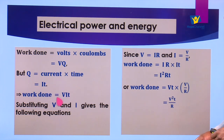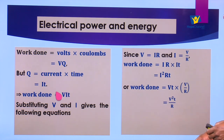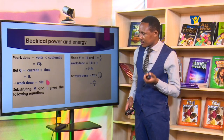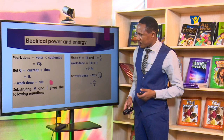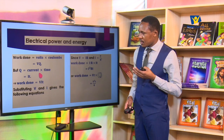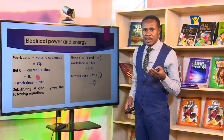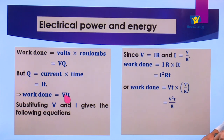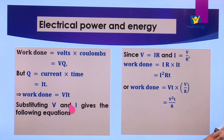Electrical energy is given by potential difference times current times time. The more the time, the more the energy supplied; the less the time, the less the energy supplied. By substituting from Ohm's law (V = IR, therefore I = V/R), we can get additional expressions. Substituting V = IR into work done = VIT gives: work done = I²RT. Substituting I = V/R into work done = VIT gives: work done = V²T/R.